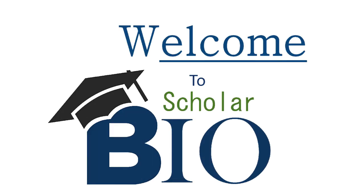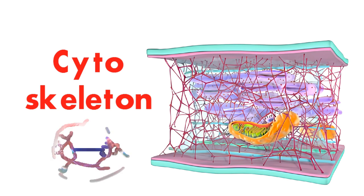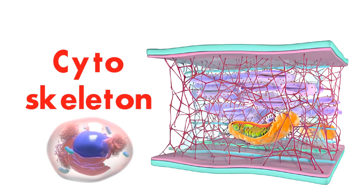Hi everyone, and welcome to another video. Today, we're going to talk about the cytoskeleton. The cytoskeleton is a network of protein filaments that give cells their shape and structure.